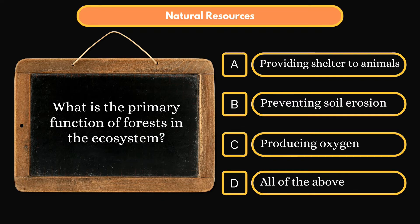What is the primary function of forests in the ecosystem? Option A: Providing shelter to animals. Option B: Preventing soil erosion. Option C: Producing oxygen. Option D: All of the above. Correct answer is Option D: All of the above.